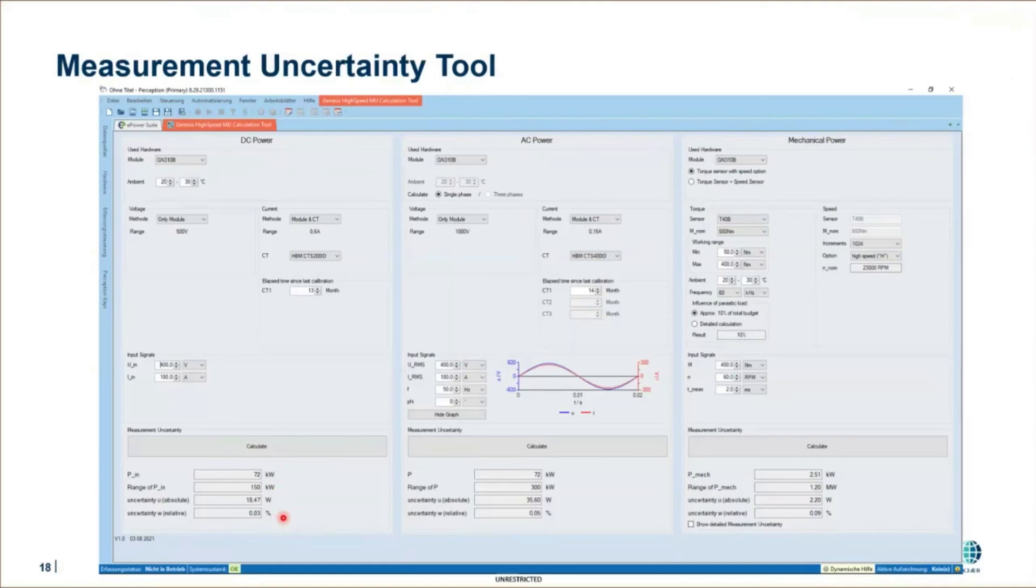And this is a really nice method to do that. And it makes it much easier for the customers, because as you saw from the slides before, it is really quite a lot of effort to do that manually, hand by hand, going through all the data sheets. And it is often difficult to categorize what is a systematic, what is a random error and all those things.